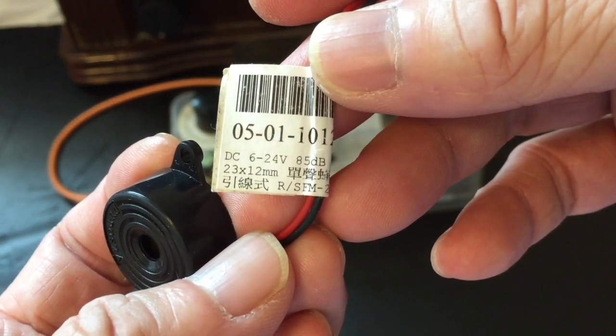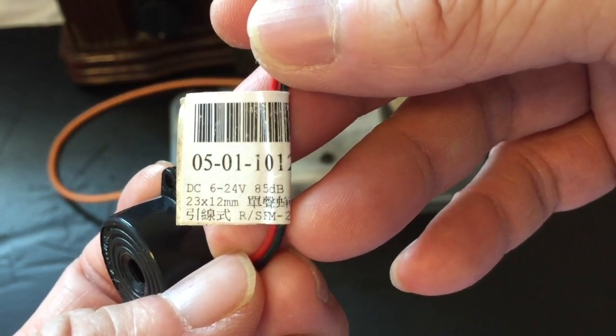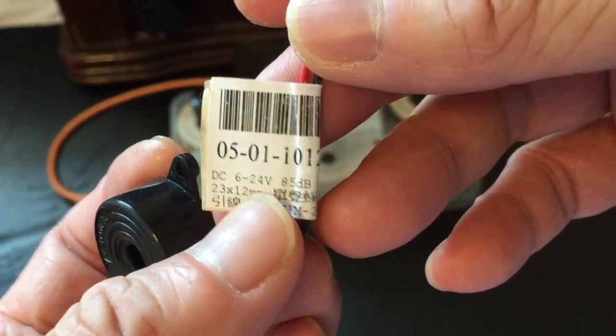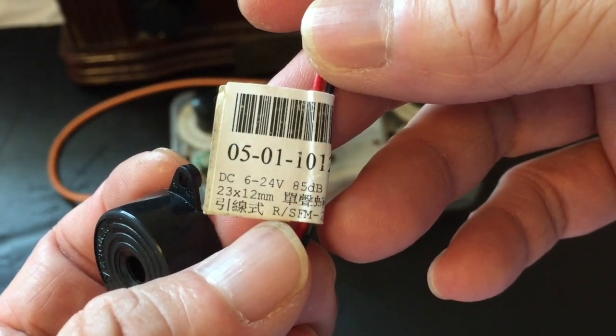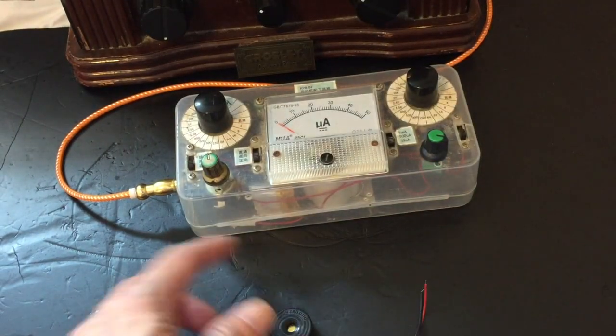You've seen my DIY video about how to create a crystal earbud out of this type of buzzer. 4 to 24 volts, 85 decibels. It only costs you 1 US dollar.